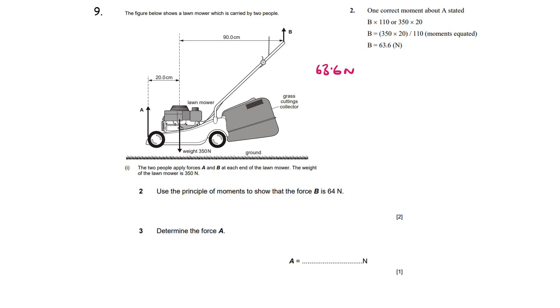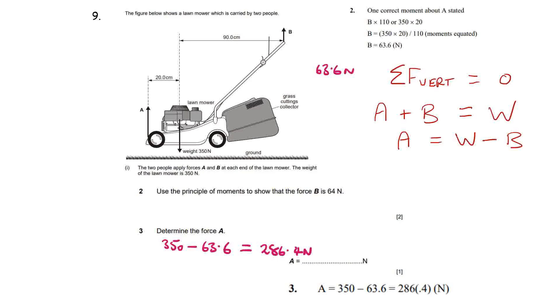Part three: determine the force at A. So we know the system is in equilibrium so the sum of the vertical forces acting must equal zero. What that really means is the forces down must equal forces up in total, and we could write it as forces up A plus B must equal the weight. We're trying to find A, so A is going to be equal to weight minus force B, which is 350 minus 63.6, or we could use 64 there, and we get 286.4 newtons as the answer.